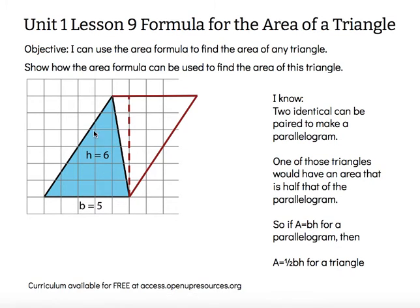So then since I know how to find the area of a parallelogram, I can consider just one of those triangles. One of those triangles would have to have half the area of a parallelogram. So if the formula for finding the area of a parallelogram is base times height,